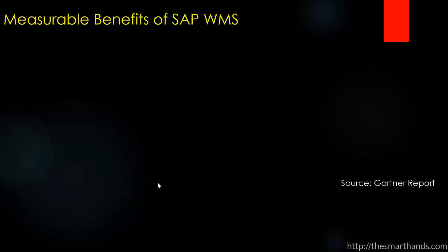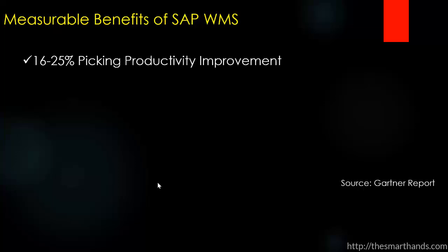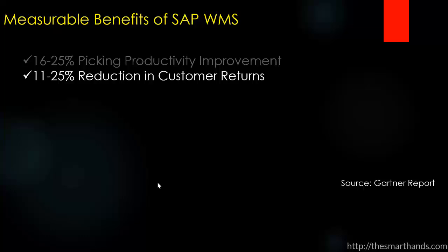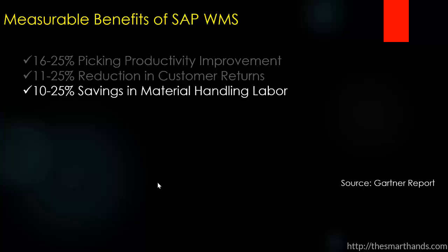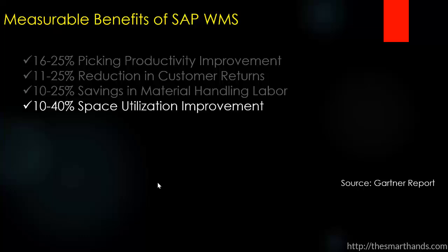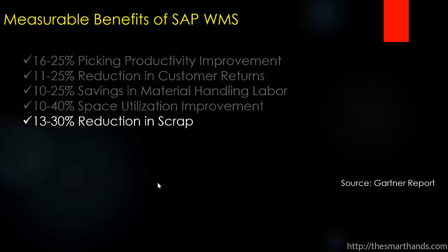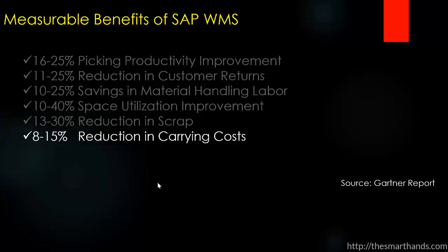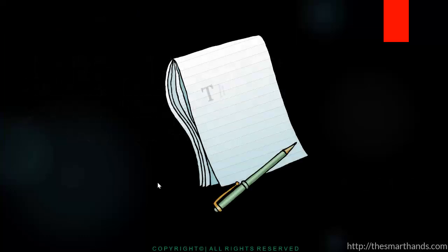Research shows the measurable benefits of using warehouse management include: 16–25% picking productivity improvement; 11–25% reduction in customer returns; 10–25% saving in material handling labor; 10–40% space utilization improvement; 13–30% reduction in scrap; and 8–15% reduction in carrying cost. That covers the introduction to SAP warehouse management — more detail will follow in the next videos.